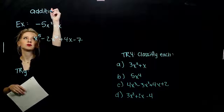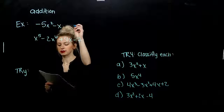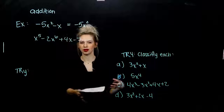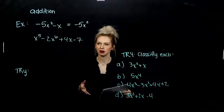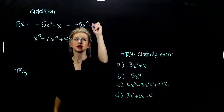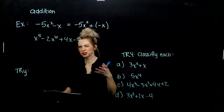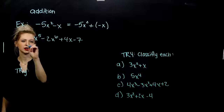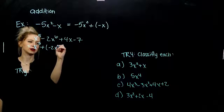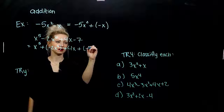We can always rewrite subtraction as addition. So if we do that in these first two cases: negative 5x squared — the negative is attached to that constant 5, making the thing just a negative — but we're subtracting in between these two. So I can turn that into addition of negative x. Similar story for down here: if I take x to the fifth, I can add negative 2x to the sixth, add 4x since it's already positive, and add negative 7.